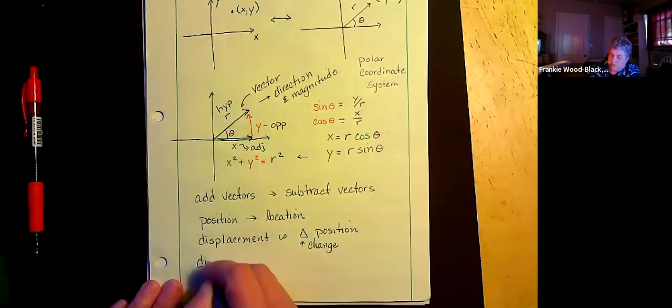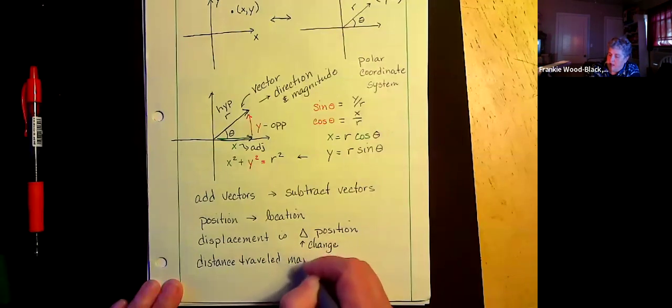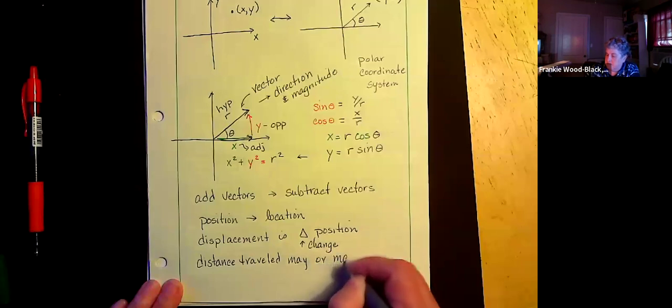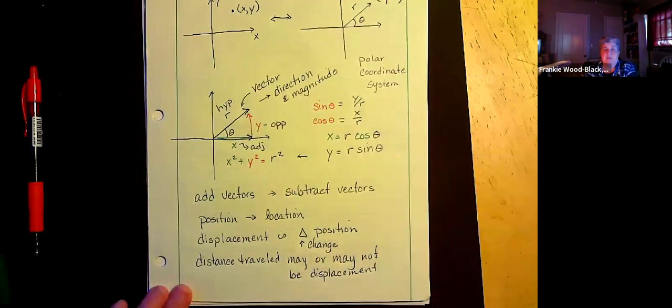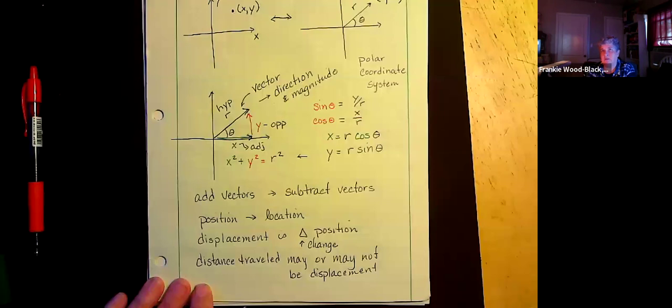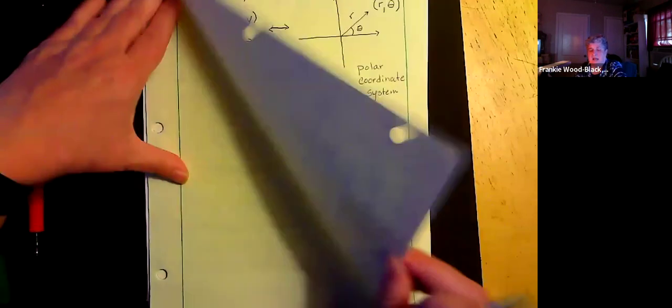But distance traveled may or may not be displacement. So when we were playing those games with third grade word problems, Joey moved three meters per second for three seconds. You know he did three meters per second for three seconds. Well he traveled nine meters. Well he may have had a total distance traveled of nine meters, but his displacement might have been zero. So a way to think about that is this.